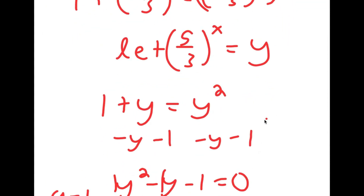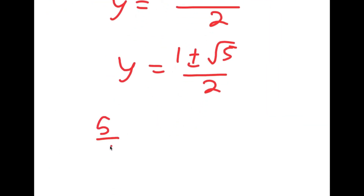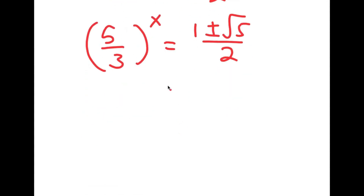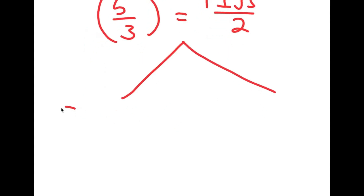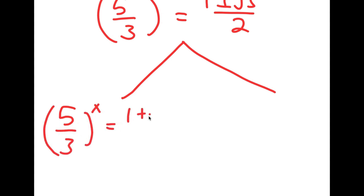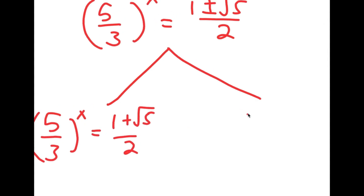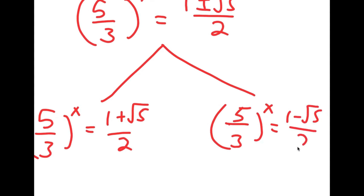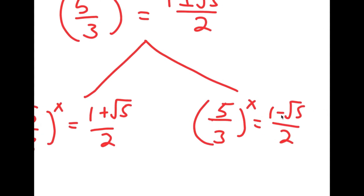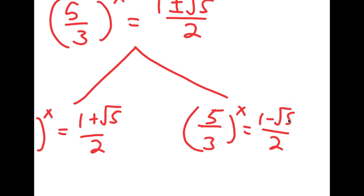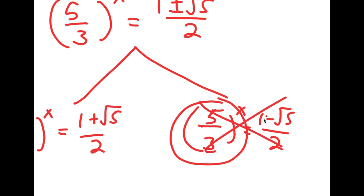Now remember we let (5/3) to the power of x equal y, so I have (5/3) to the power of x equals (1 plus or minus the square root of 5) over 2. This gives two equations: (5/3)^x = (1 + √5)/2 and (5/3)^x = (1 − √5)/2. For the second equation, 1 minus the square root of 5 is a negative number, and a negative number divided by 2 is still negative. Since a positive number to any power cannot equal a negative number, there is no solution for this case.